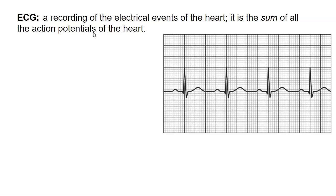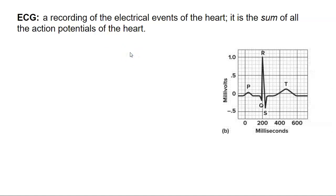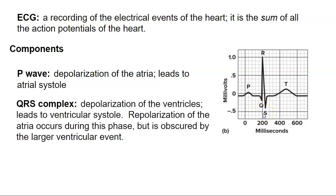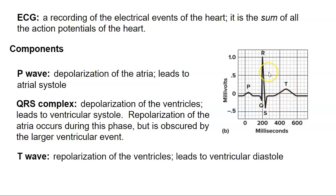Let's zoom in on one of these waves. We see the P wave, which is associated with the depolarization of the atria — that leads to atrial systole, or contraction of the atria. Then there's the QRS complex, which is the depolarization of the ventricles, and that leads to ventricular systole or ventricular contraction. Then we have the T wave, which is the repolarization of the ventricles. The reason why we don't see the repolarization of the atria is because it gets obscured in the QRS complex.